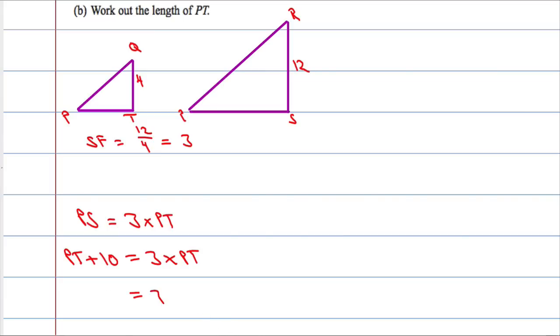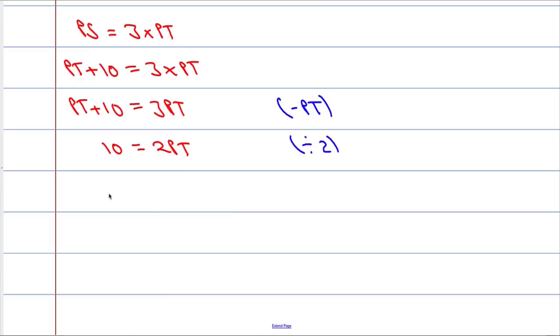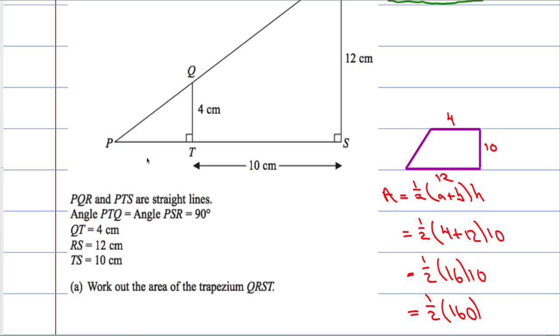So, let's just tidy that up. 3PT is equal to PT plus 10. Then, we're going to take PT away from both sides. So, 10 equals 2PT. And then finally, we're going to divide both sides by 2, you get PT is equal to 5.